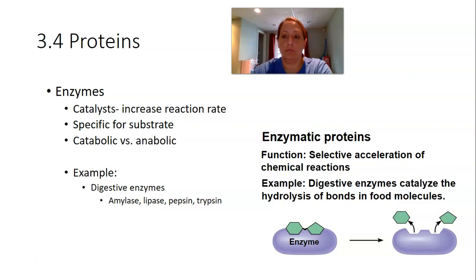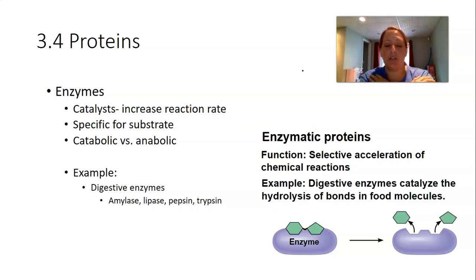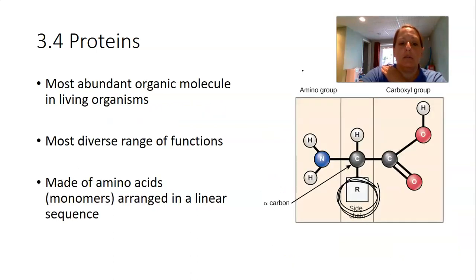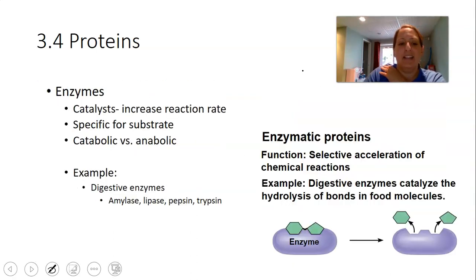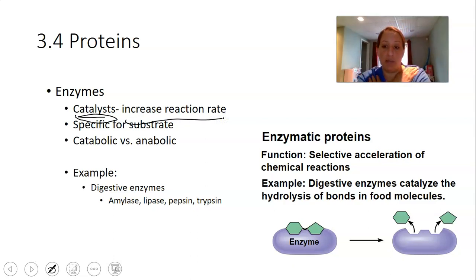Proteins have a multitude of different functions in cells. Some proteins are enzymes. An enzyme is a substance that speeds up a chemical reaction — we also call them catalysts. Catalysts increase the reaction rate, making reactions happen faster.